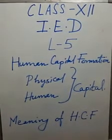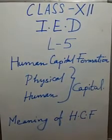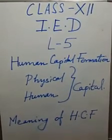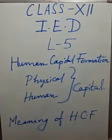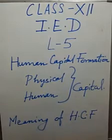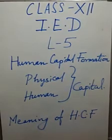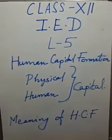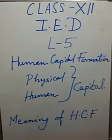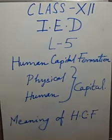Once again — physical capital includes all those inputs which are required or used for further production processes, like plant and machinery, factories, buildings, raw material, etc. On the other hand, human capital refers to the stock of skills, talent, attributes, ability, expertise, education, and knowledge embedded in the people.